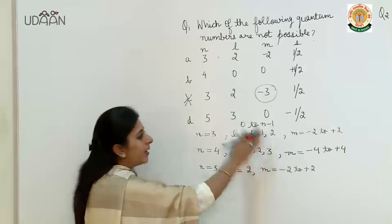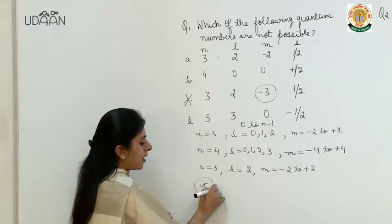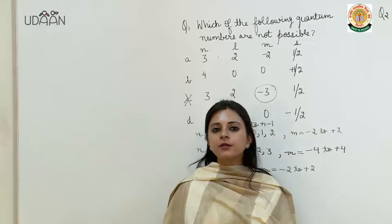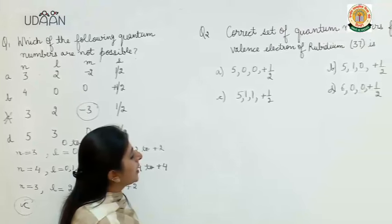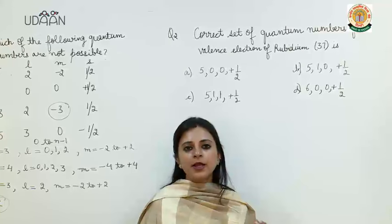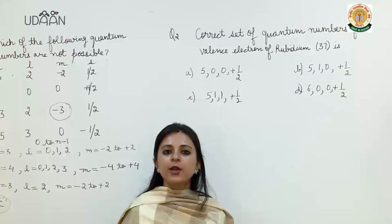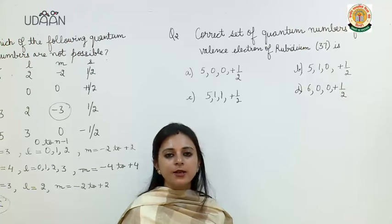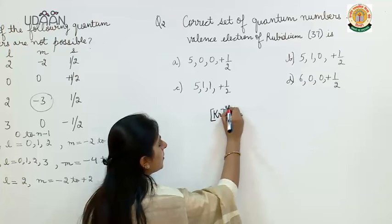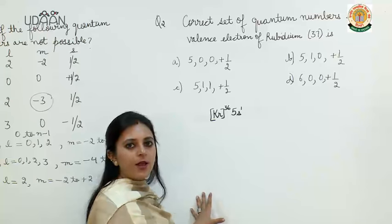If n value is 3 then l will be 0, which means this is the d orbital. Now for the valence electron of Rubidium (Z=37), when you have such a question, first you will write the element's electronic configuration. Krypton 36 is the core, so Rb is [Kr] 5s1. So Z equals 37 and this is the configuration.